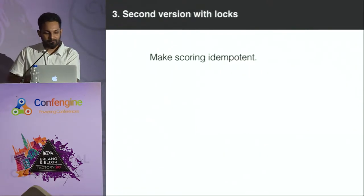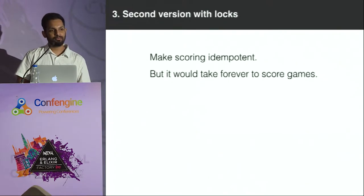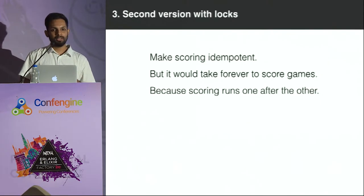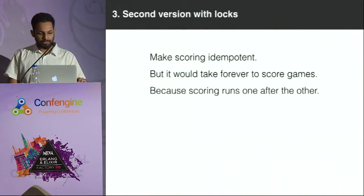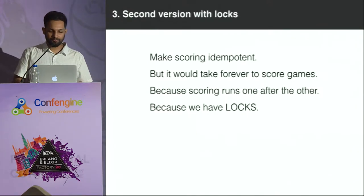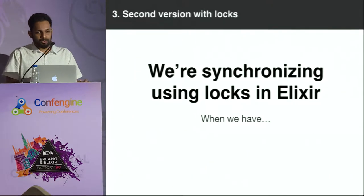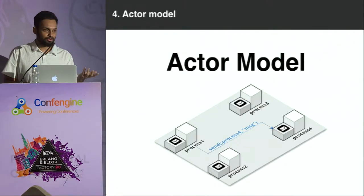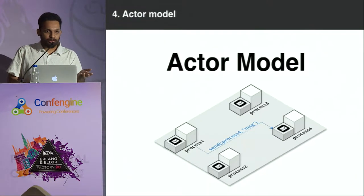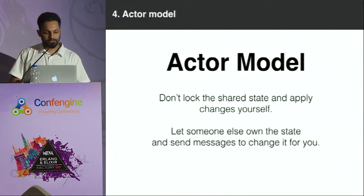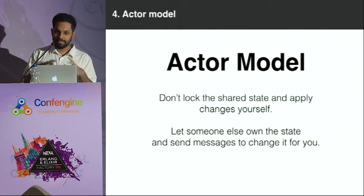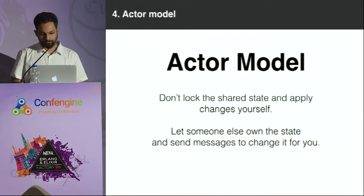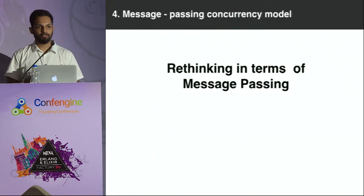We have to make our scoring idempotent. But that would mean the scoring would take a really long time because we're using all in-game events from the whole season to calculate scores, and we have to do this for every game one after the other because we have locks. But why are we even using locks in Elixir when we have the actor model? The actor model of concurrency says we don't create locks on shared state and change it ourselves. Instead, we let an actor own the state, send a message to the actor, and ask it to change it for us. So let's rethink our solution in terms of actors and message passing.